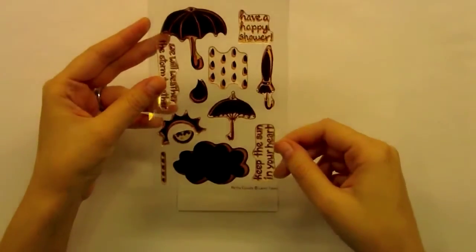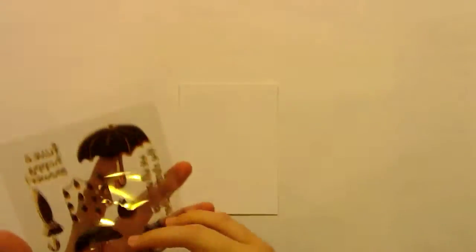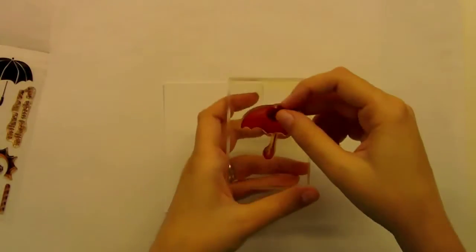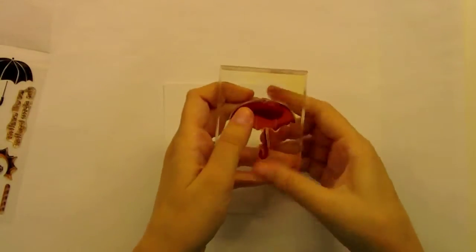And then right now I've got Partly Cloudy, a Lawn Fawn stamp set out, and I'm going to use that big umbrella which I really love. It's really fun. It reminds me of Singing in the Rain, which I love. I'm just getting out my acrylic block and getting ready to stamp.